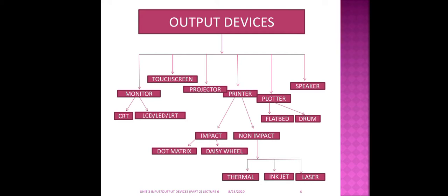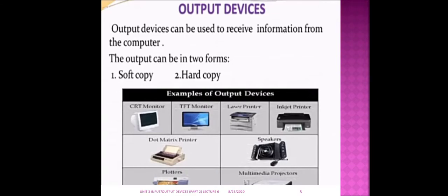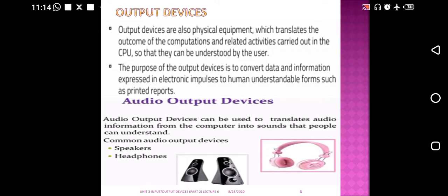You can see monitor, touchscreen, projector, printer, plotter, and speaker — these are all output devices, shown here in pictorial form. The question is: why do we use output devices? They are used to receive information from the computer in two forms: soft copy and hard copy. Output devices are also physical equipment, meaning we can touch them.